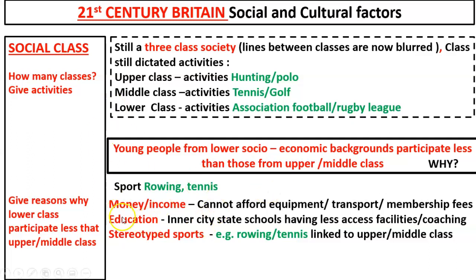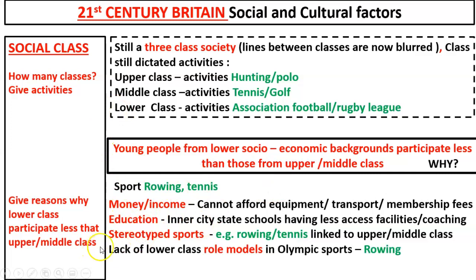This links directly to a lack of lower class role models in Olympic sports such as rowing. You're not going to see people from a low socioeconomic background in rowing because they might not be able to afford the associated equipment, which makes participation really difficult.